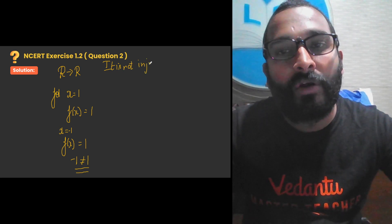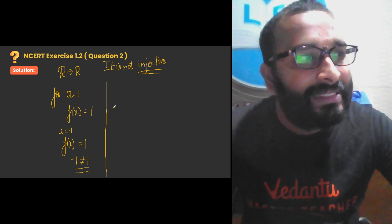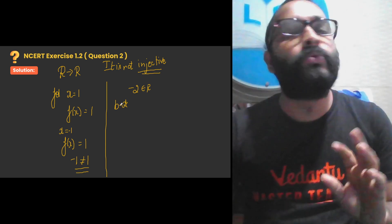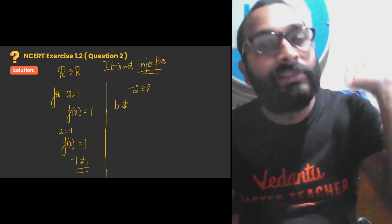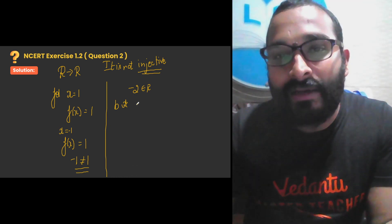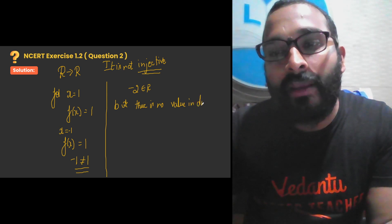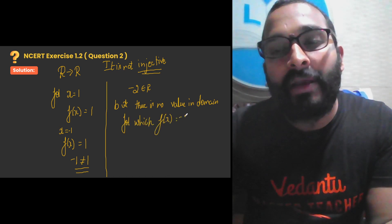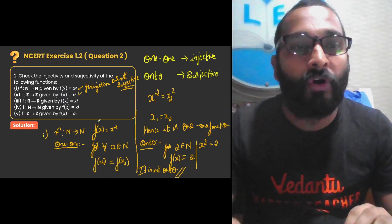Once you prove it is not injective, let us also check for surjective. For example, −2 belongs to the set of real numbers R, but there is no value of x for which f(x) = −2, because the square root of a negative number does not exist in R — it falls under complex numbers. So it is not surjective. Hence the function is neither injective nor surjective for sub-question 3.